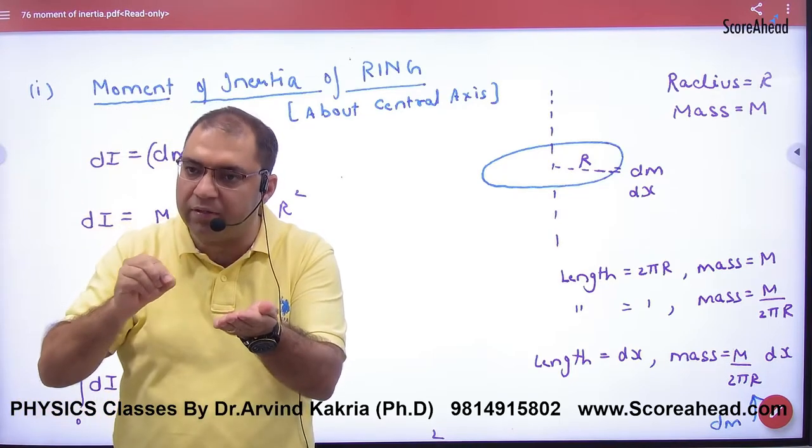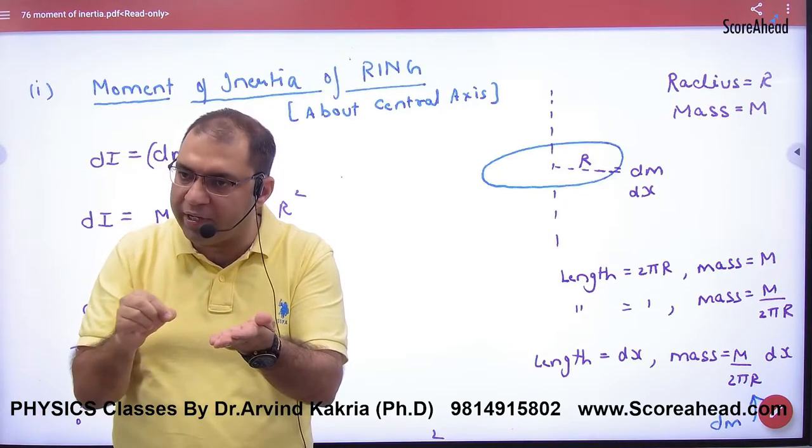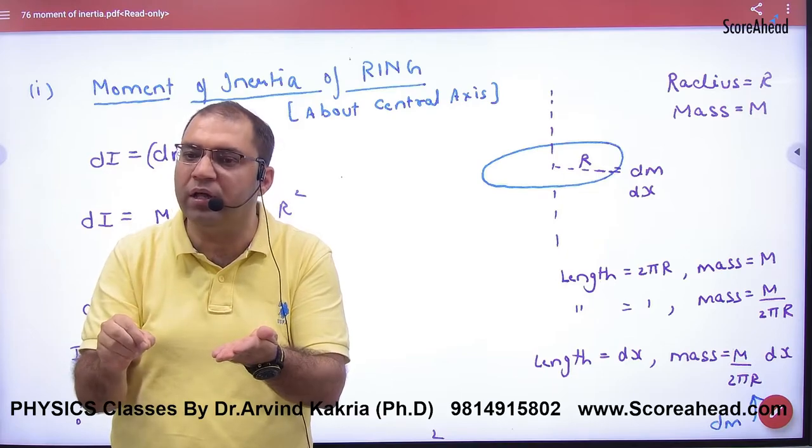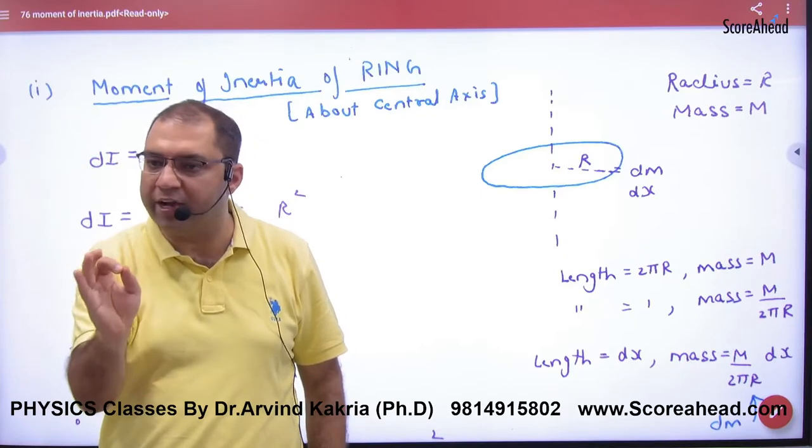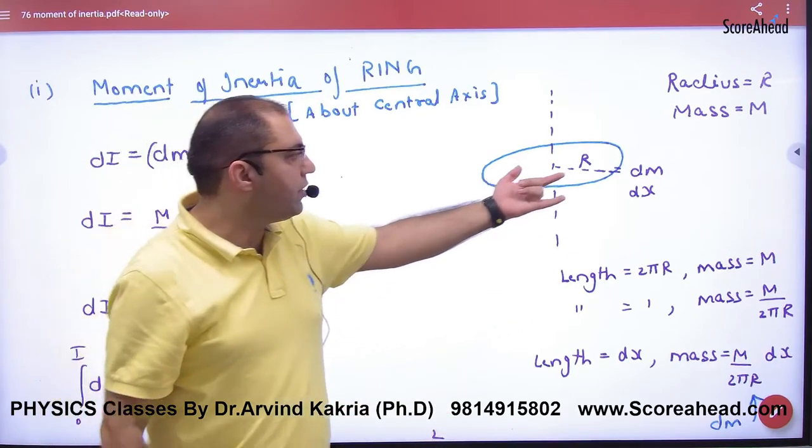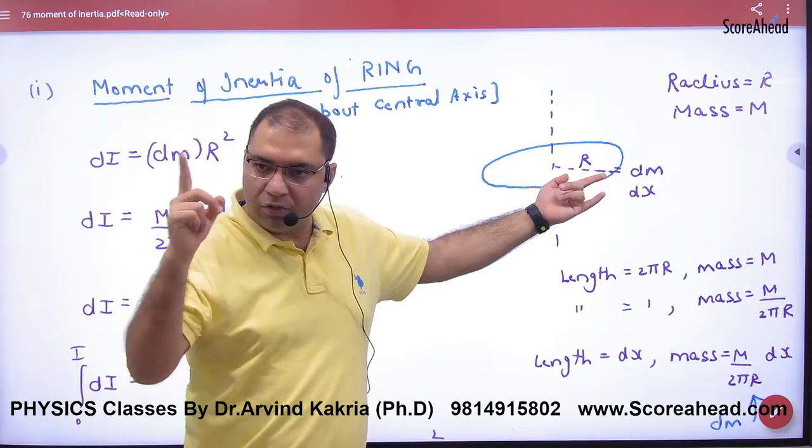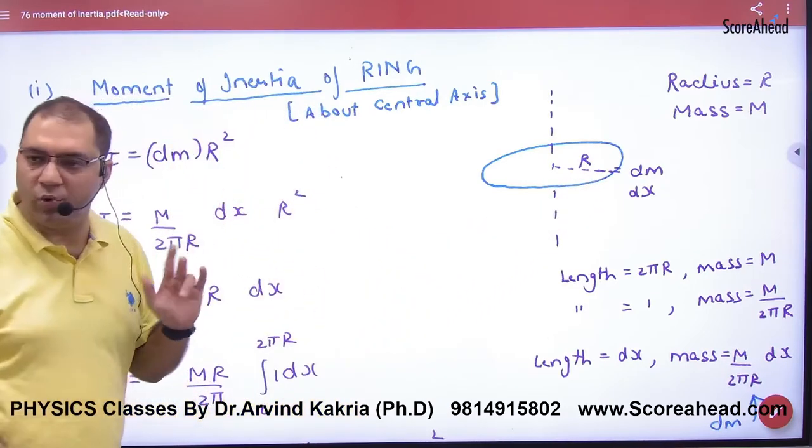Small elements di—calculate and integrate for the total ring moment of inertia. First, take a small particle, a small point mass dm at axis distance r. So the small moment of inertia is di = dm × r².